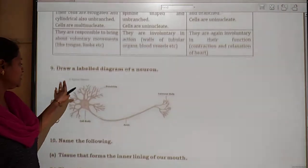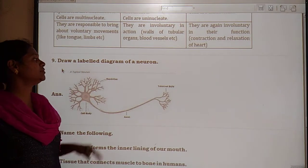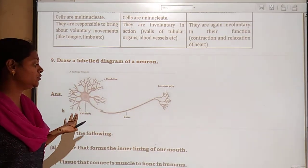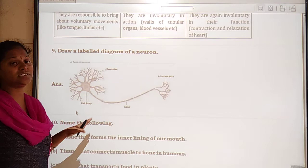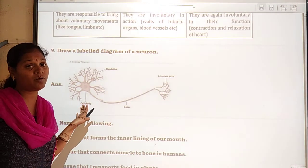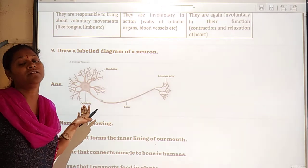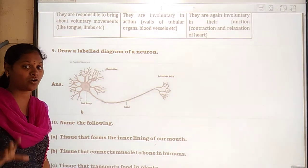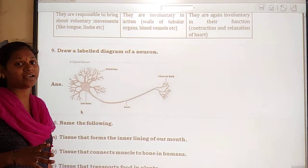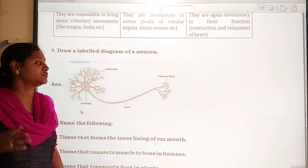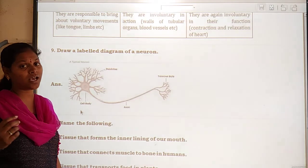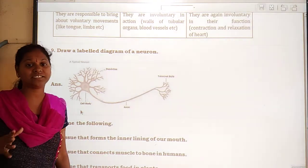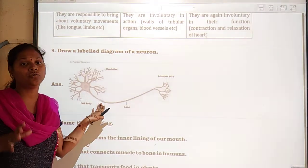Next question is to draw a labeled diagram of the neuron. The neuron system's main function in our body helps to send messages throughout the body. For example, when you touch a hot object you can feel it, or when you are hungry you need to eat. All types of activities — hunger, sleep — are based on the supply of messages throughout our body with the help of the neuron system.